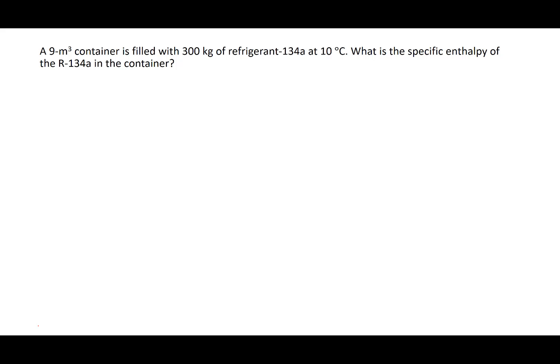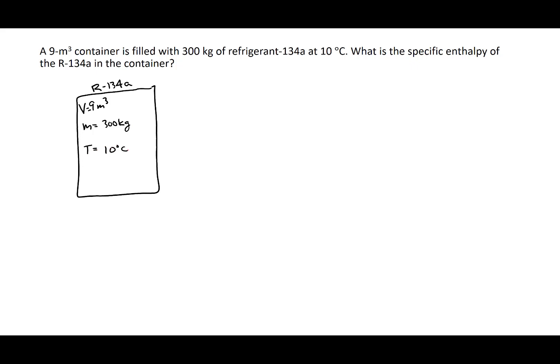This problem says that we have a 9 meter cubed container filled with 300 kilograms of refrigerant. We have refrigerant 134A, so volume is equal to 9 meters cubed, mass is equal to 300 kilograms, and temperature is 10 degrees Celsius. We want to know what is the specific enthalpy of the R134A in the container, so we're looking for H, the specific enthalpy.